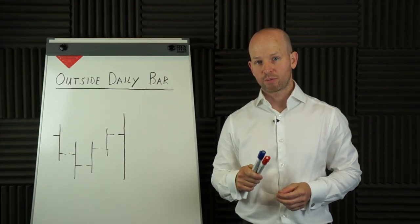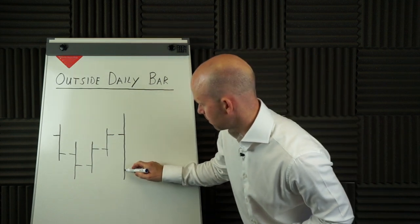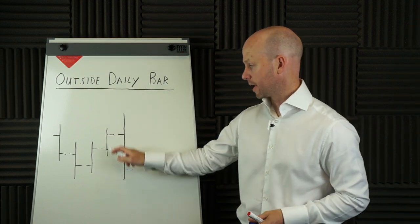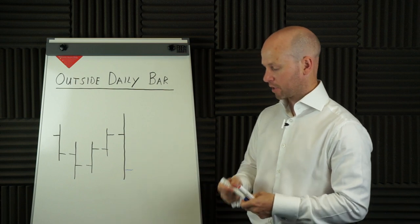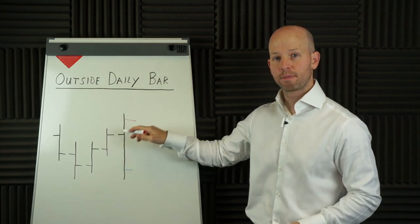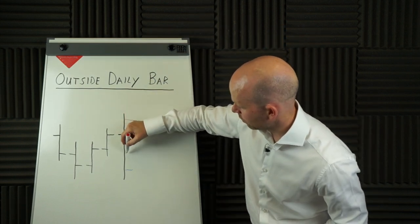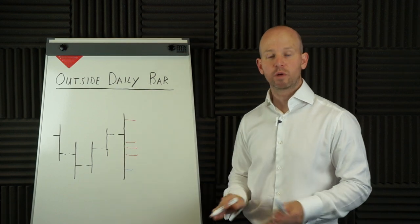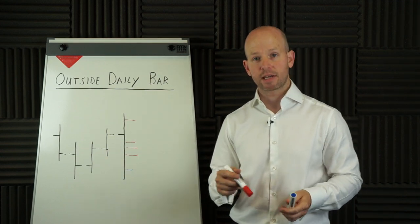Then we need to look at the closing price of the outside bar. If the close is below the low of the previous bar, that's our signal to buy. If the close is above the high of the previous bar, that is a short sell signal. If the close is within the range of the previous bar — not above the high or below the low — we don't take a trade at all. We're only looking for a close either above the high or below the low.